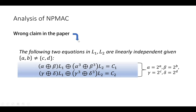Let us come to the analysis of NPMAC. Here the most important claim that Naito has used in the paper is this claim. He claims that these two equations are linearly independent given that the set (a, b) is not equal to the set (c, d). Alpha is 2 to the power a, beta is 2 to the power b, gamma is 2 to the power c, and delta is 2 to the power d. Naito claims these two equations are linearly independent, but we show that this claim is wrong.